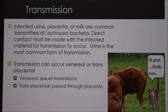Transmission: infected urine, placenta, or milk are common transmitters of Leptospira bacteria. Direct contact must be made with the infected material for transmission to occur. Urine is the most common form of transmission, as you can see in this photo. Transmission can also occur venereal or transplacental.